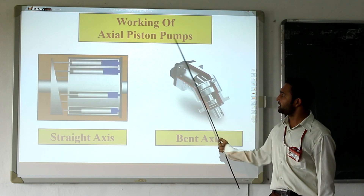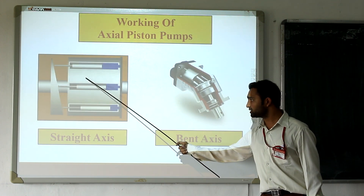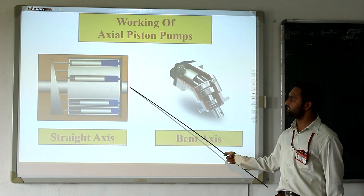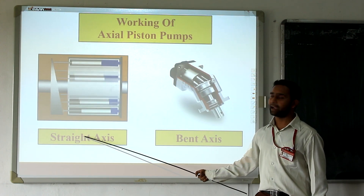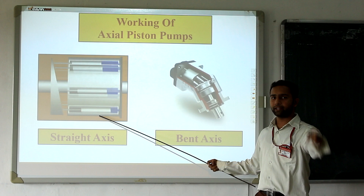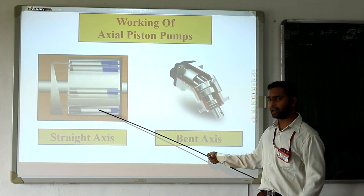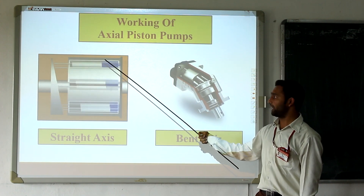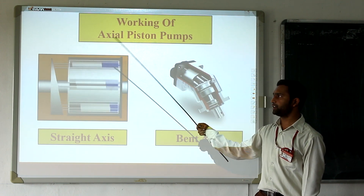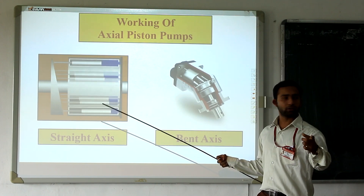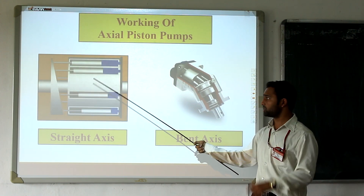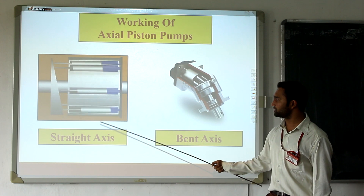Working of the axial piston pump. The working is indicated in straight axis form, where the cylinder block axis and the drive shaft axis have the same axial direction — that's why its name is straight axis form. In this case, 180 degrees from the top side to the down side, during that rotation, suction occurs, and 180 degree rotation on the other side means discharge. So 180 degree suction and 180 degree discharge — one complete revolution has 180 degree suction and 180 degree discharge. This is the working of the straight axis pump.